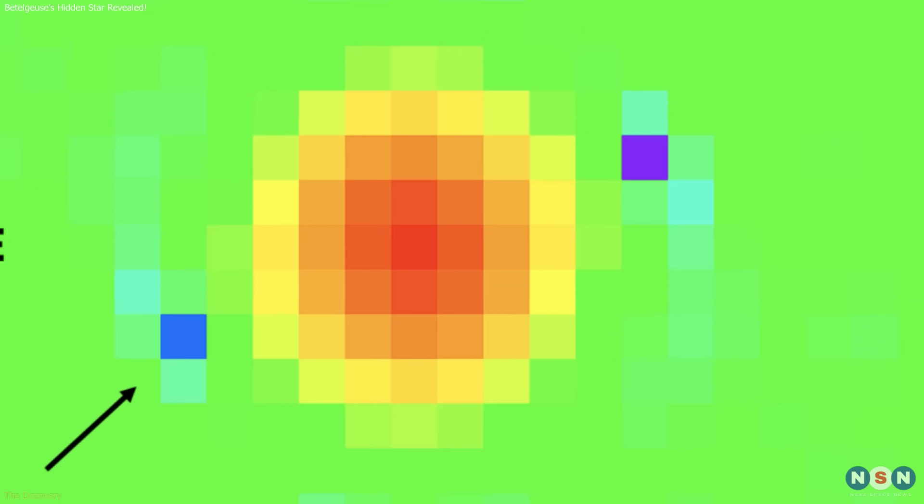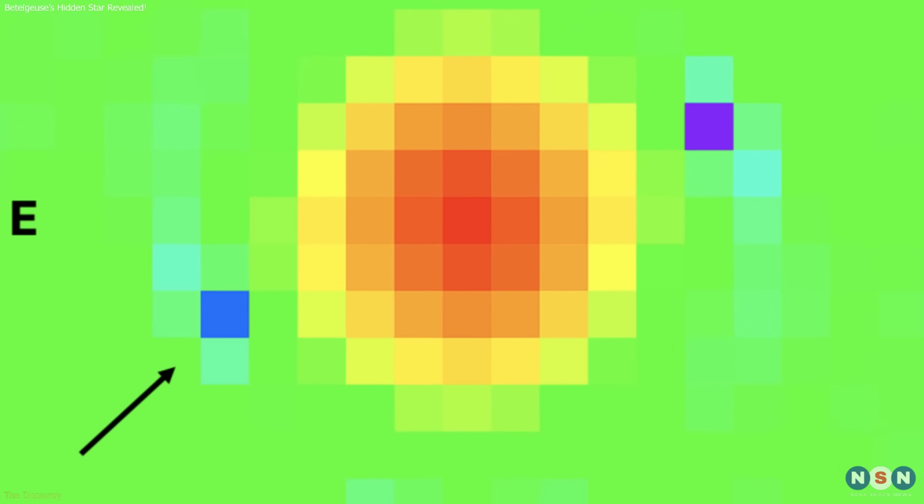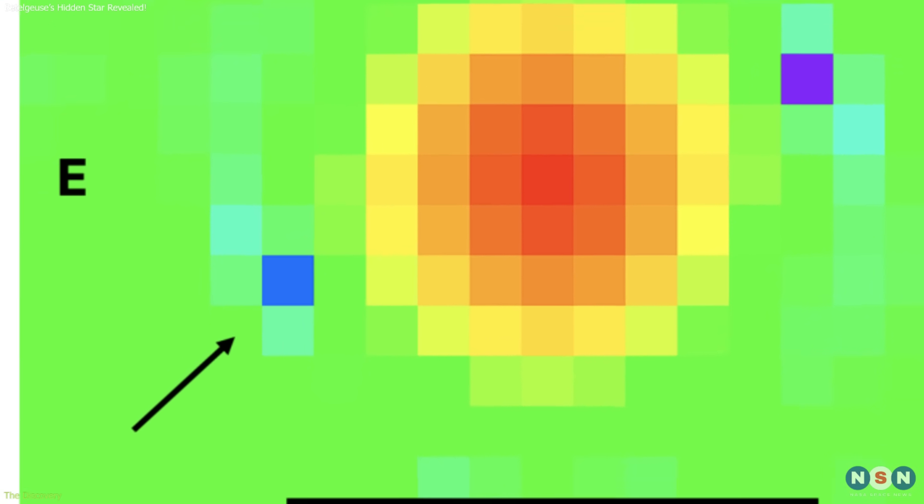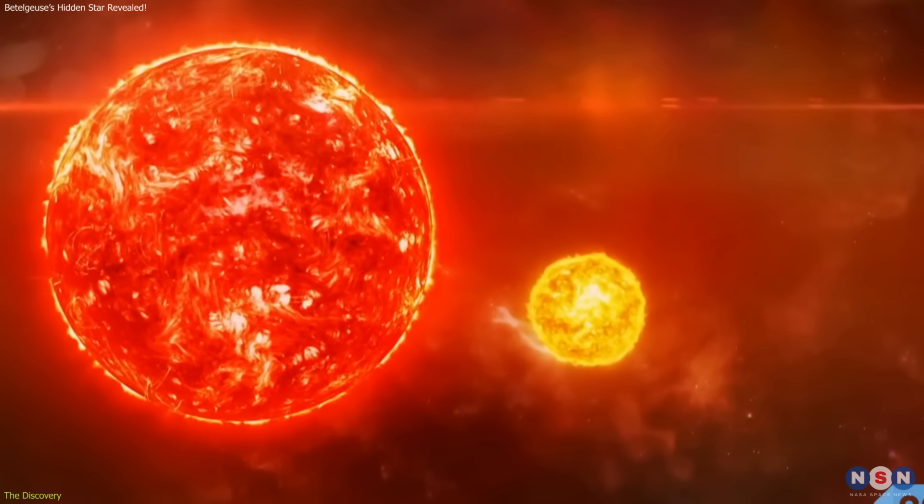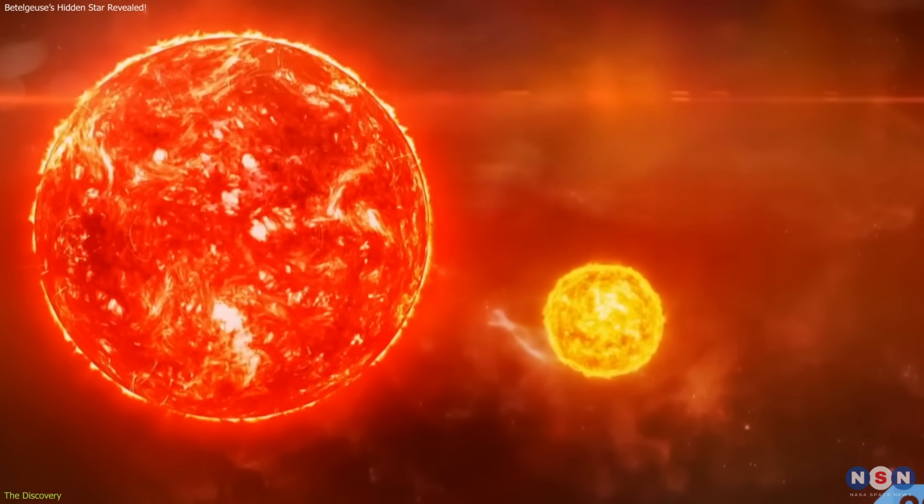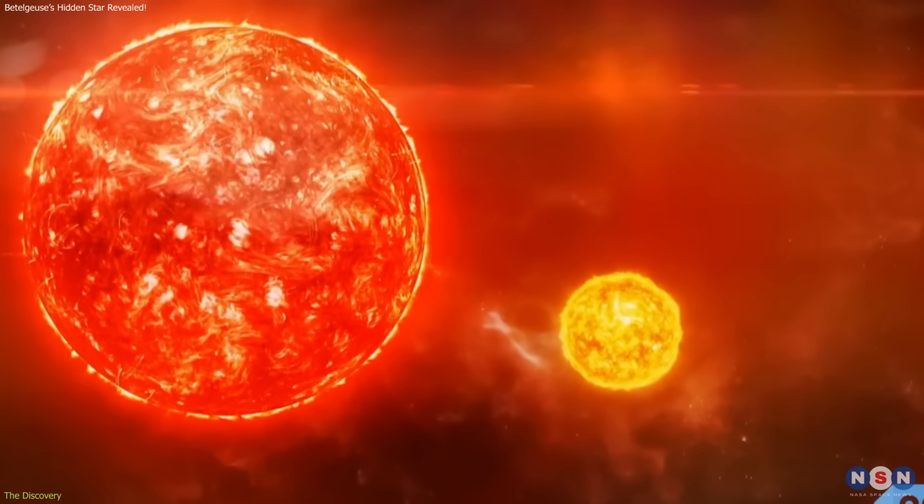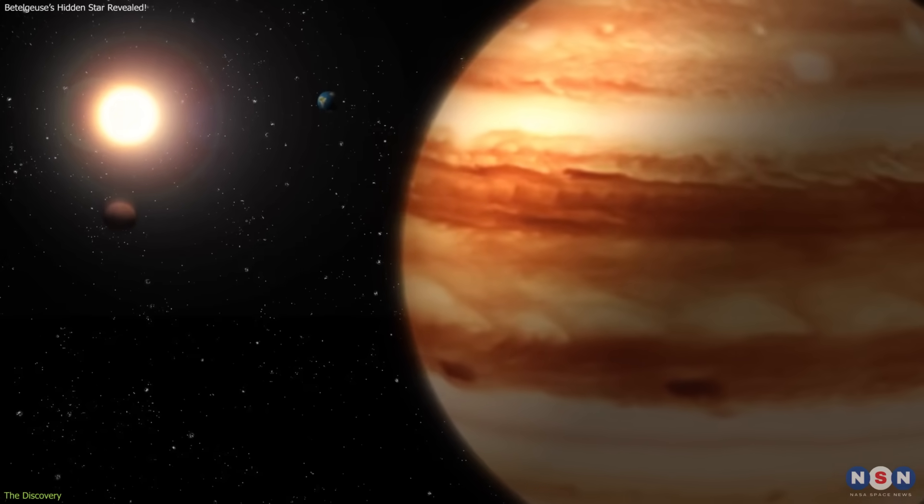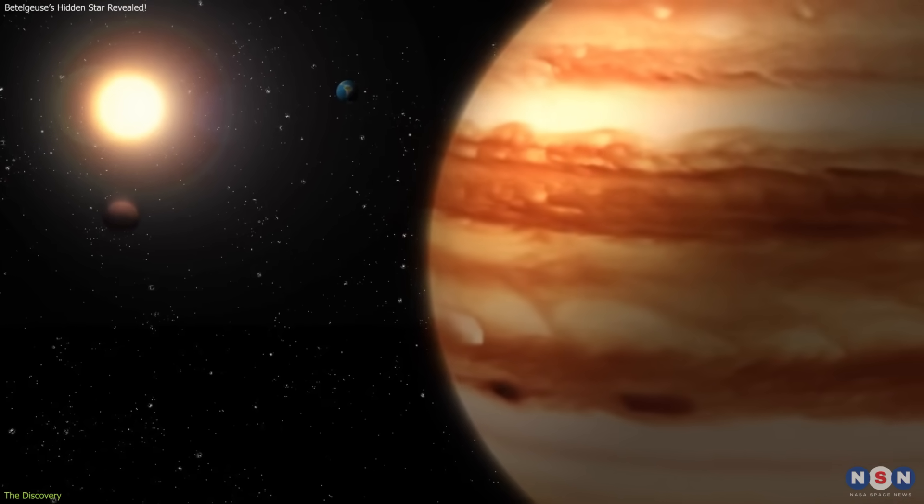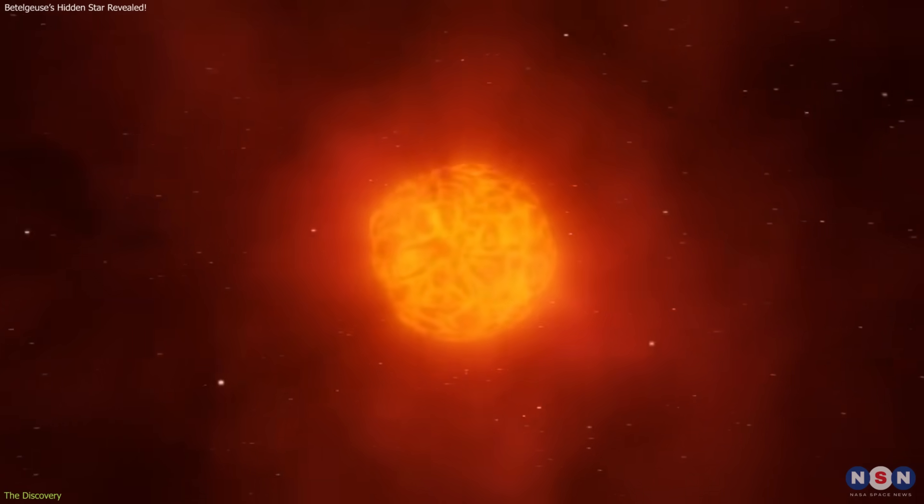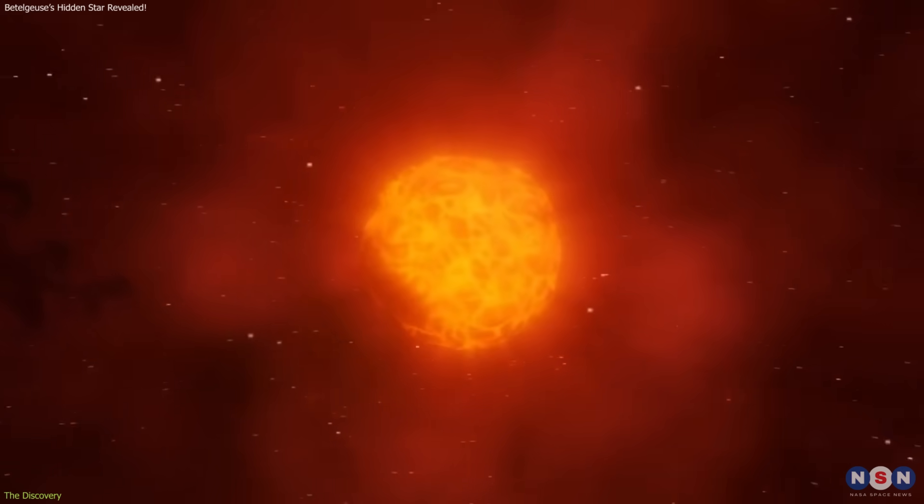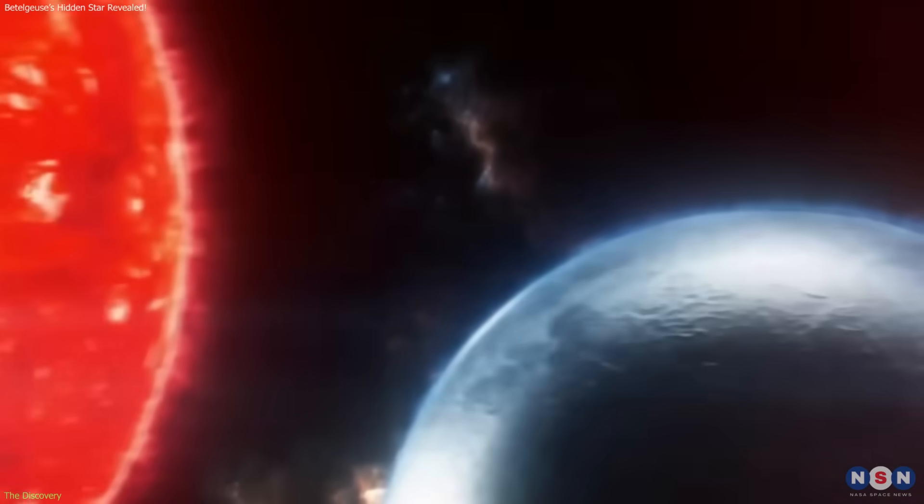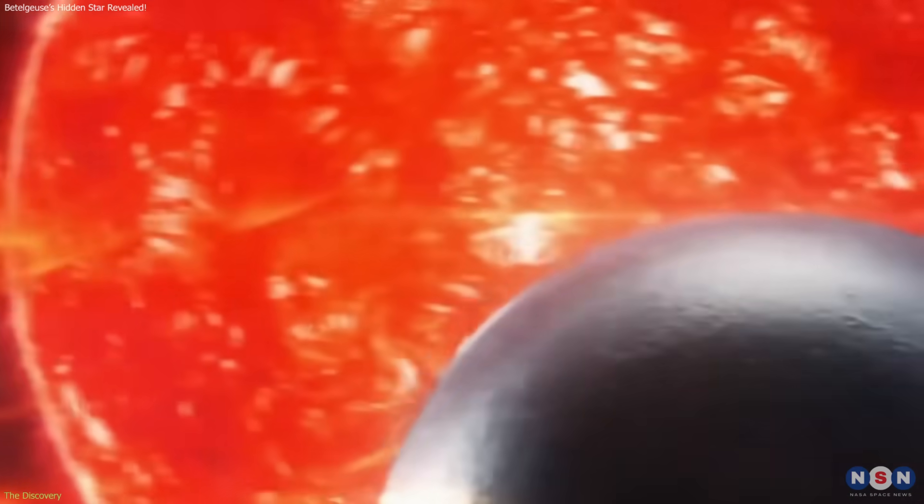In the processed images, they identified a faint point of light exactly where models predicted a companion should be. Initial analysis suggests it could be a star with a mass somewhat larger than the sun's, orbiting at a distance comparable to Jupiter's orbit around our sun. But because Betelgeuse's outer layers extend so far, this means the smaller star is embedded deep within the giant's atmosphere.